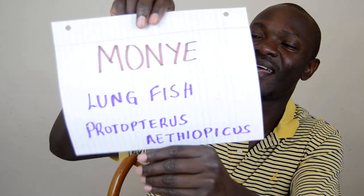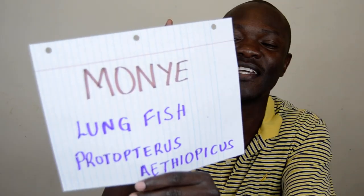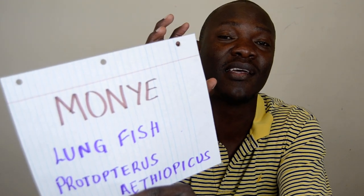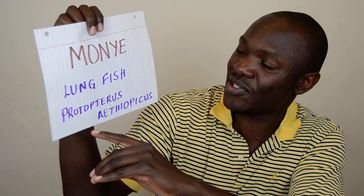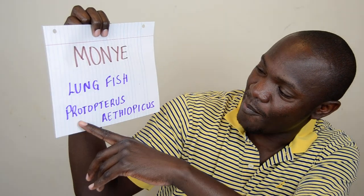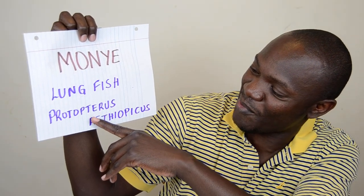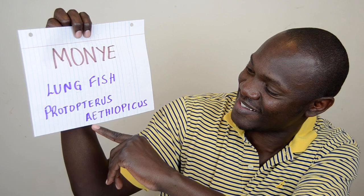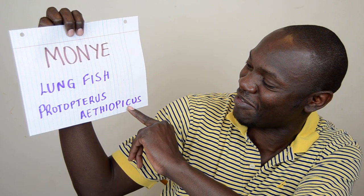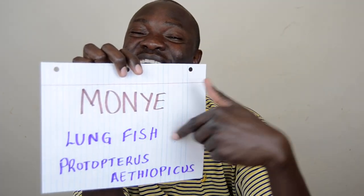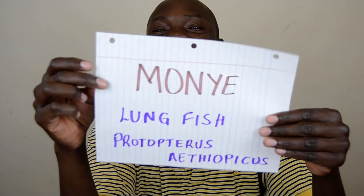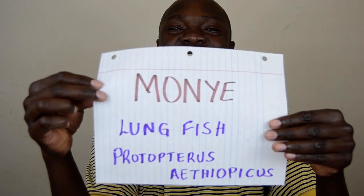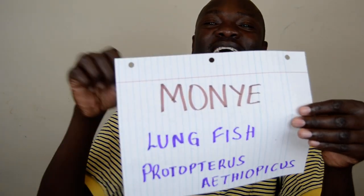Then there is another one called Monye. Monye is lungfish — it looks like a snake. Monye is lungfish, and its scientific name is Protopterus — whatever the full name is, but it is lungfish. Just click pause and search that in Google Images.